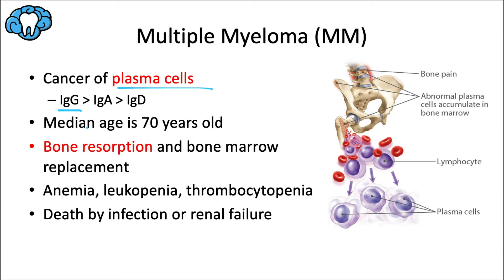The median age of those affected by multiple myeloma is around 70 years old, so you'll see this condition more commonly among elderly patients. This plasma cell proliferation leads to bone resorption, so one of the main symptoms is bone pain. It also causes replacement of bone marrow, which leads to anemia, leukopenia, and thrombocytopenia. Anemia means low red blood cells, leading to fatigue and loss of appetite. Leukopenia refers to low white blood cells, causing decreased immune response and increased infection risk. Thrombocytopenia is a low platelet number, which increases bleeding risk. Infection is the most common cause of death due to the leukopenia.